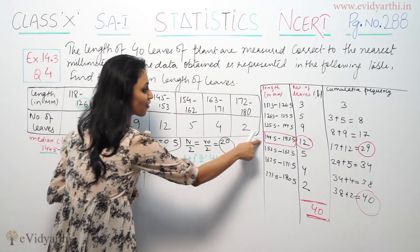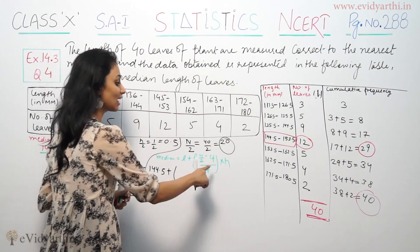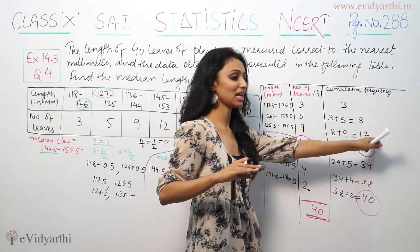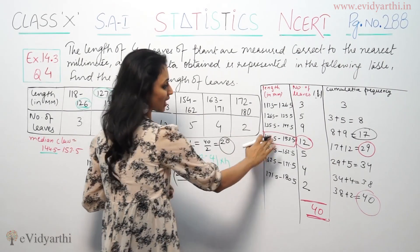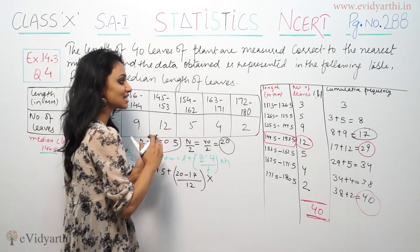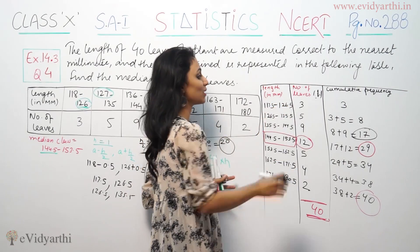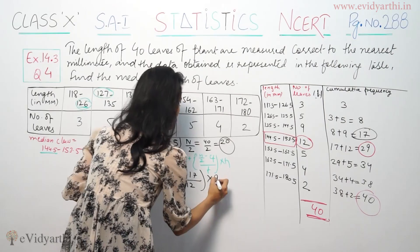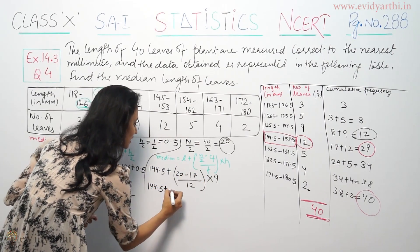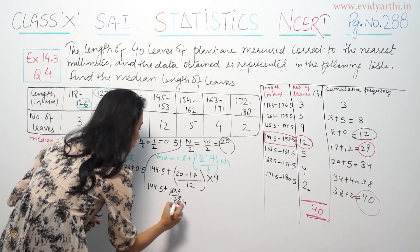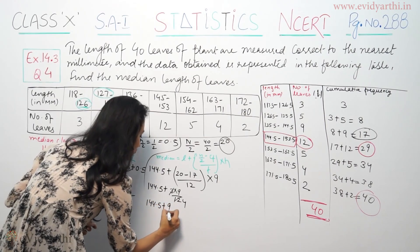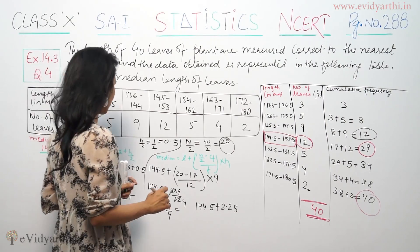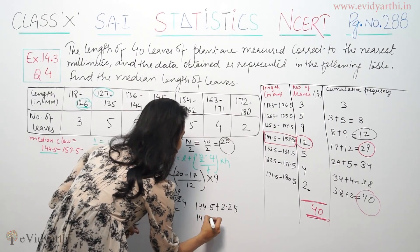So the lower limit L is 144.5. n by 2 is 20. The cumulative frequency before the median class is 17. The frequency of the median class is 12. The class size h is 9, since 126.5 minus 117.5 equals 9. So: 144.5 plus (20 minus 17) divided by 12, multiplied by 9 equals 144.5 plus 2.25, which equals 146.75.